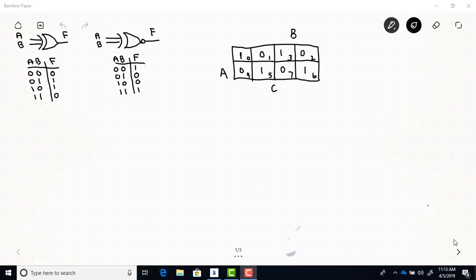I'd like to talk about two additional gates from the basic gates we talked about earlier, and that's these two gates here. This gate, this symbol and truth table, represents a gate called the exclusive OR.